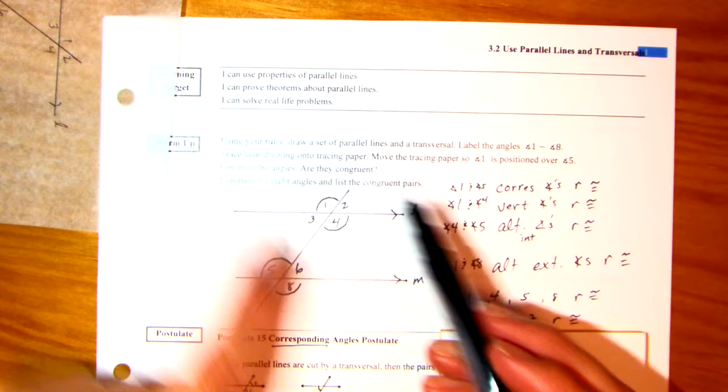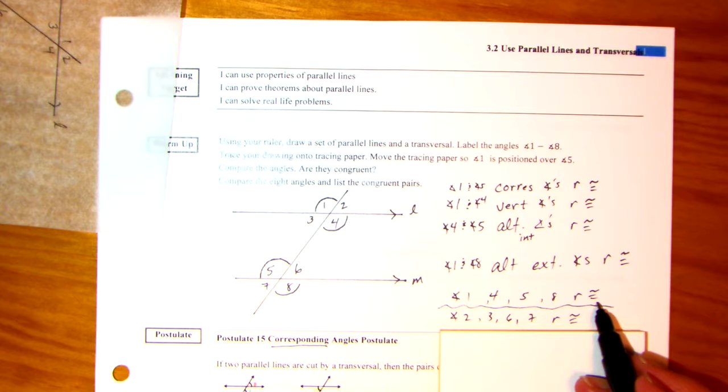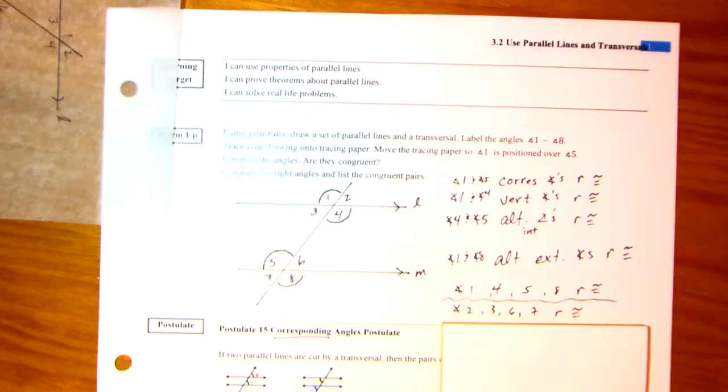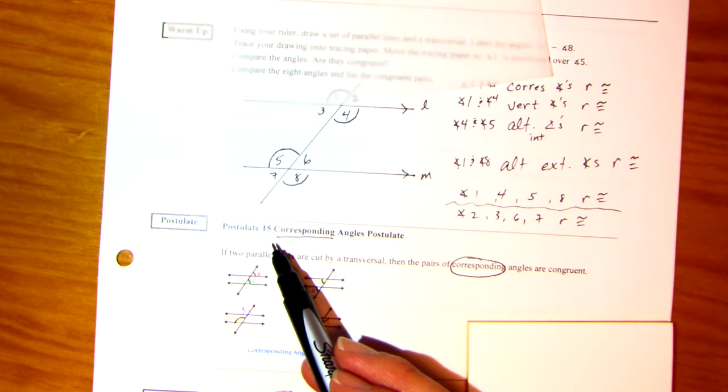So are the angles congruent? Some. And then compare the angles and the congruent pairs. So angles 1, 4, 5, 8 are congruent. Therefore, angles 2, 3, 6, 7 are congruent.